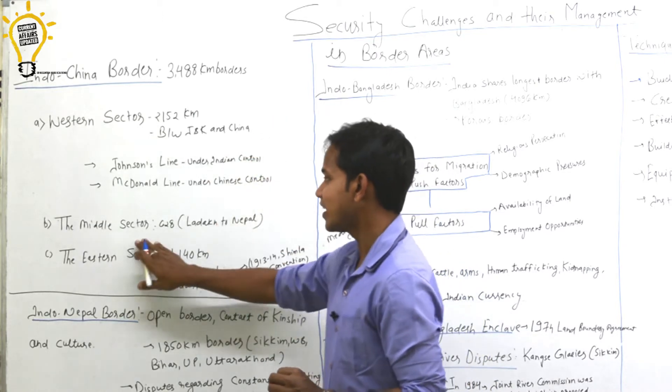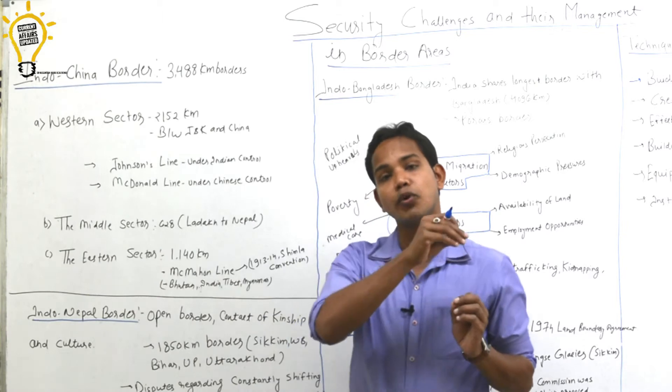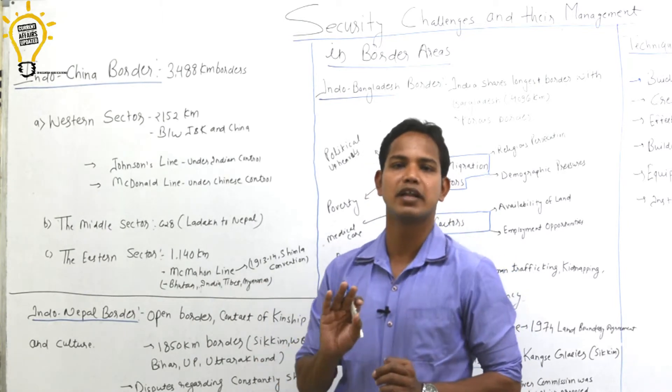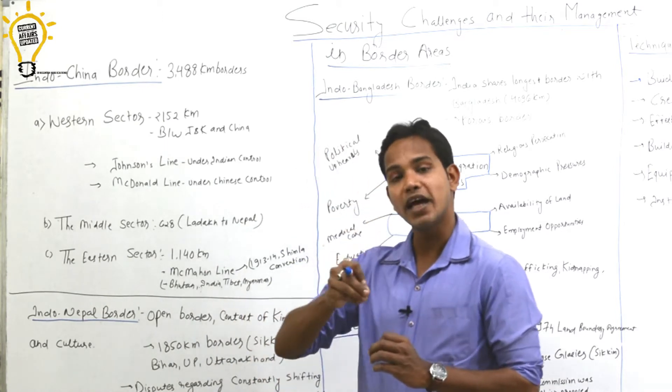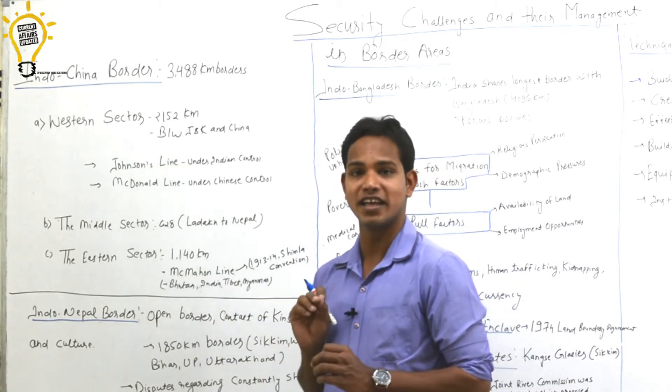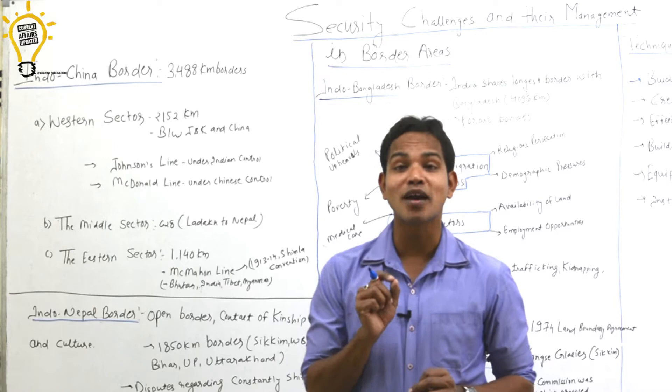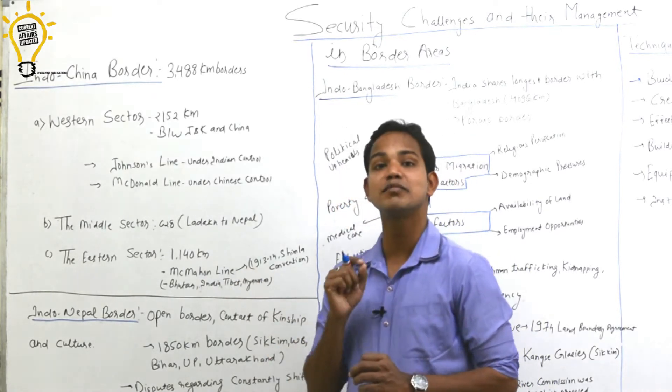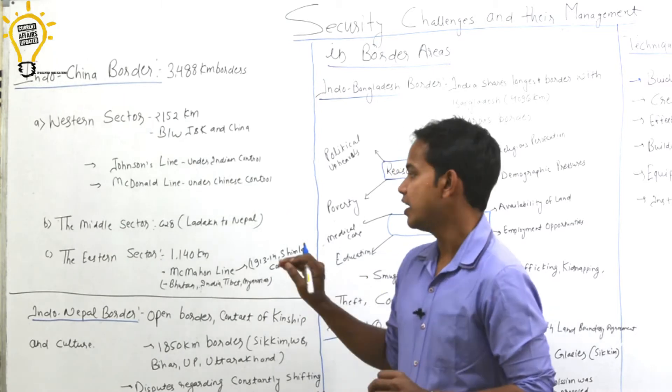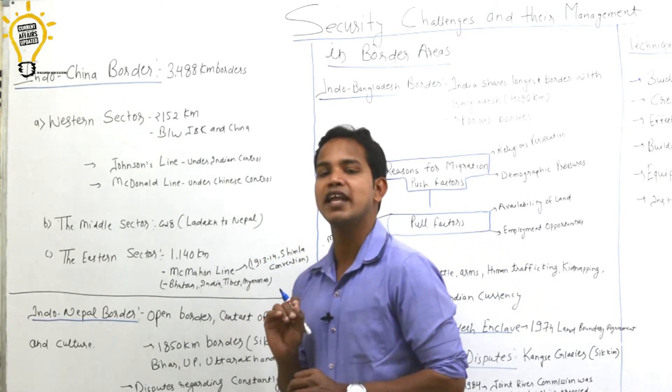Middle sector is the whole Nepal border where there is no dispute. Third is the eastern sector, which is exclusively from Bhutan to Arunachal Pradesh. If we go to that line, we call it the McMahon Line. McMahon Line is a frequently asked exam question about which border.